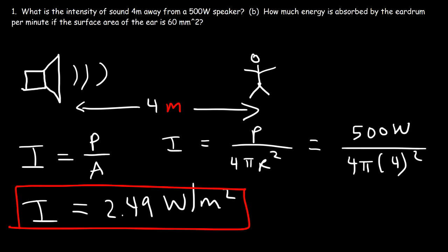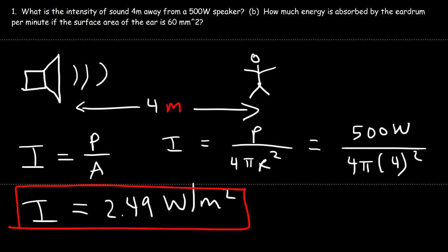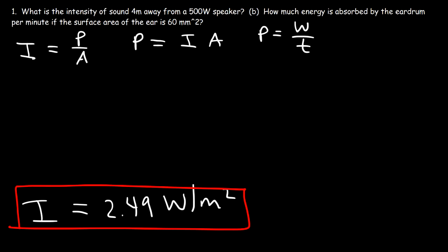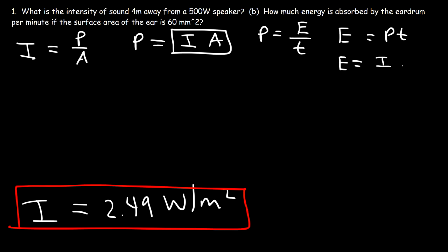For part b: how much energy is absorbed by the eardrum per minute if the surface area of the eardrum is 60 square millimeters? Intensity is power divided by area, so power is intensity times area. Power is also the transfer of energy per unit time, so the transfer of energy equals power multiplied by time — which is intensity times area times time.